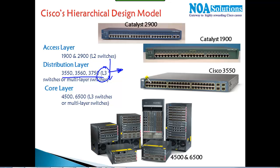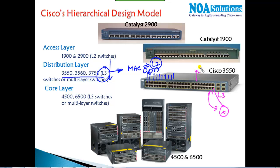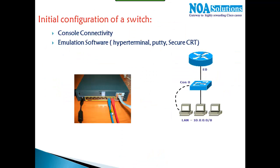The major advantage of layer 3 switches is they perform layer 2 functions — identifying and forwarding traffic by MAC address — but can also connect to a router and run routing protocols, using ports as layer 3 ports for routing. That is why they are called multi-layer switches. Similarly, core level switches like the 4500 and 6500 series can also perform layer 3 jobs.